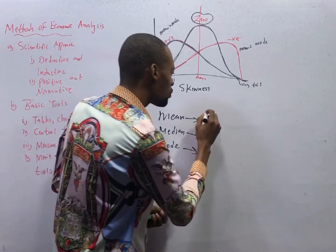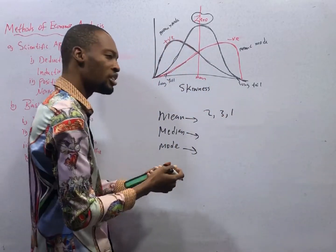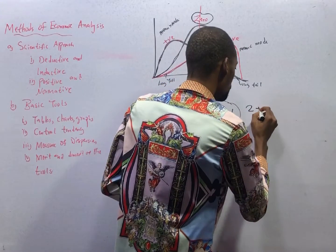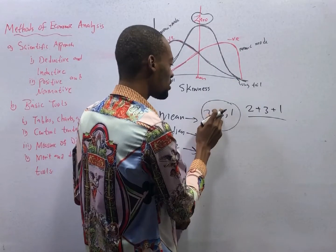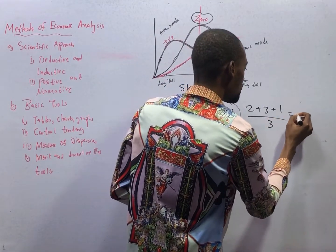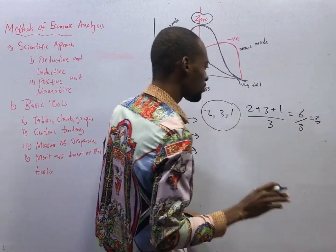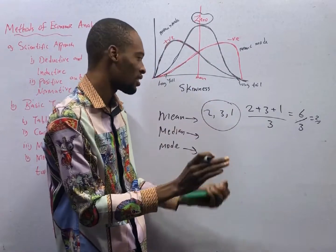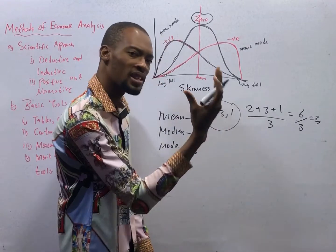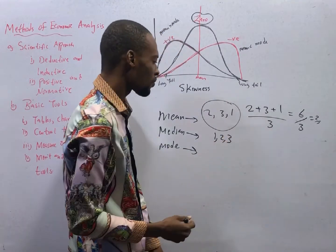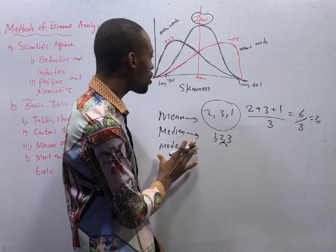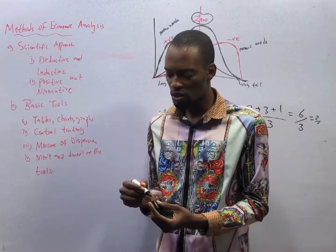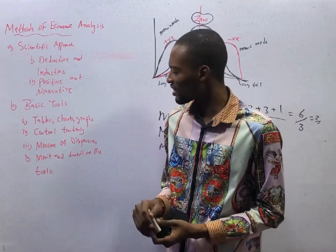The mean is an average number. If I give you 2, 3, 1 — to find the mean, simply add these 3 numbers and divide by how many they are: 2 plus 3 plus 1 over 3, which is 6 over 3, and that is 2. The median is the middle number after you arrange the numbers in order. Starting from smaller to bigger: 1, 2, 3 — the median is 2, the middle number. The mode is the number that appears the most. The measures of dispersion we deal with are range, variance, mean deviation, and standard deviation.